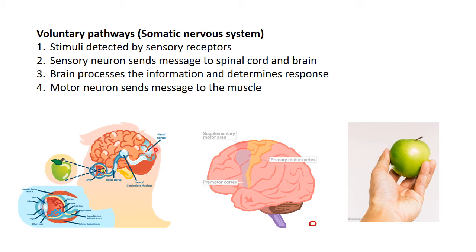The third step is the brain processes the information — it sees an apple and feels hungry, so it decides to pick it up. Our motor cortex is the part of the brain important for controlling muscles and movements. It then sends a message down to the muscles that move our arm and hand along a motor neuron. So we have a sensory nerve carrying the message to the brain, and a motor nerve carrying the response to our muscles.